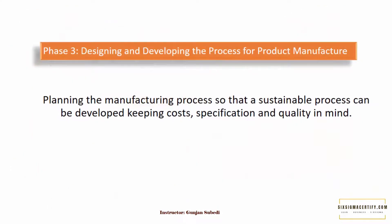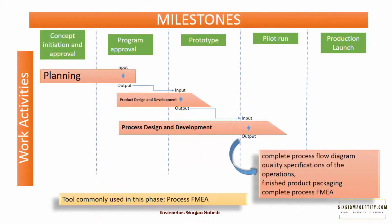Phase 3: Designing and developing the process for product manufacture. Phase 3 looks at planning the manufacturing process so that a sustainable process can be developed, keeping costs, specifications, and quality in mind. The outcomes of this phase include a complete process flow diagram, quality specifications of the operations, finished product packaging requirements, and a completed process FMEA — process failure modes and effects analysis — to identify and plan for risk involved in the process. The quality tool used in this phase is process FMEA.